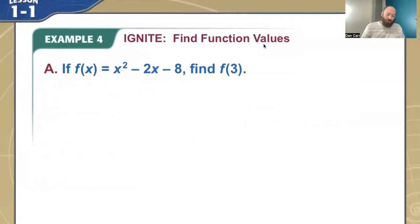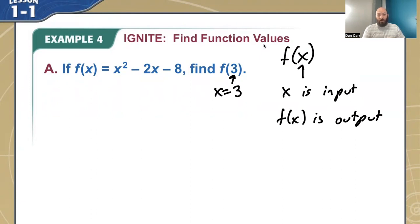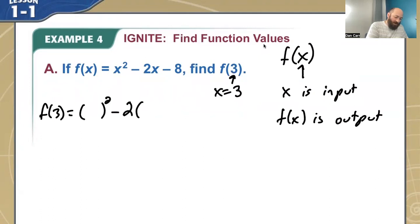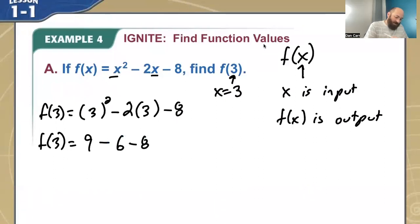Now we're going to evaluate some functions. With our function notation, when I say F of X, X is the input and F of X is the output. In this case, X is equal to 3. When I want to find F of 3, we are going to plug in 3 for every single X value. I'm going to replace all of my X's with parentheses, and then input the 3. This especially helps with negative numbers. So doing our order of operations: 3 squared is 9, negative 2 times 3 is negative 6, and then minus 8. F of 3 equals 9 minus 6 is 3, minus 8 is negative 5.